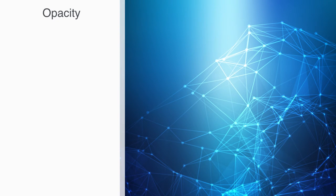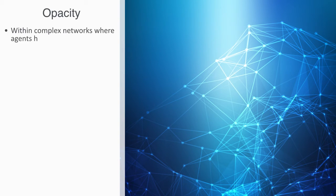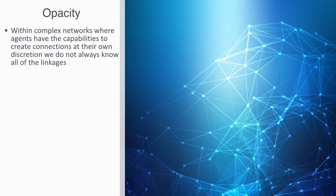We're far from exhausting this topic of economic and financial resilience, but we'll just touch upon one final consideration here, that is the question of opacity. Within complex networks, where agents have the capacity to create connections at their own discretion, we don't always know all of the linkages. If the system is configured in such a fashion that it is in the interest of the agents to conceal their interactions, as is often the case with financial networks, and particularly the case with hedge funds and other forms of shadow banking that are not formally regulated.